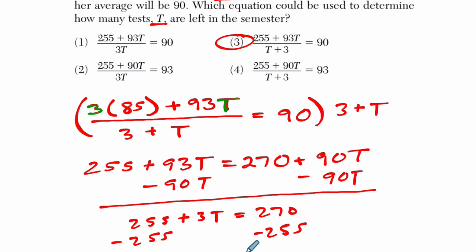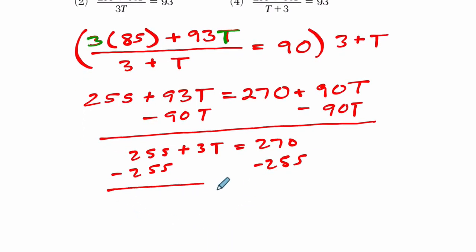And then I just subtract 255 on both sides. And what do I get? Well, if I do that, I get 3t equals 15 and divide both sides by 3. And I get t equals 5. So there are five tests which you would score 93 on.